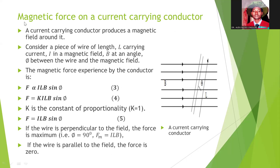Let's look at magnetic force on a current carrying conductor. If you have a current carrying conductor of length L placed at an angle theta in a magnetic field B, the magnetic force experienced by the conductor is given by equation 3. The force is directly proportional to the current, the length of the conductor, the magnetic field, and the angle the conductor makes in the magnetic field.